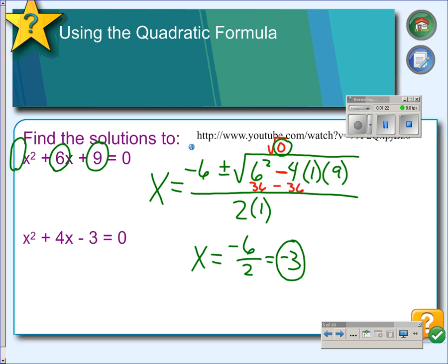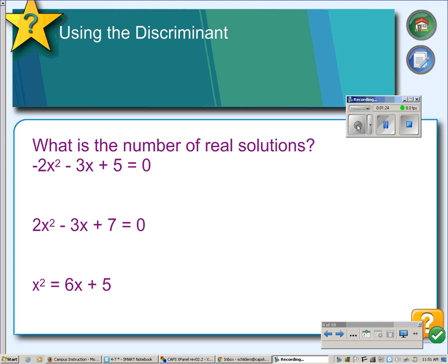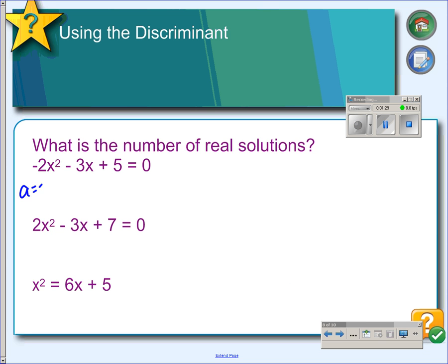So let's try a couple other examples. In this first example, we have a equal to negative 2, b is negative 3, and c is 5. So, calculating the discriminant, which is only b squared minus 4ac,